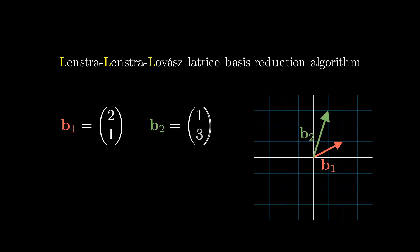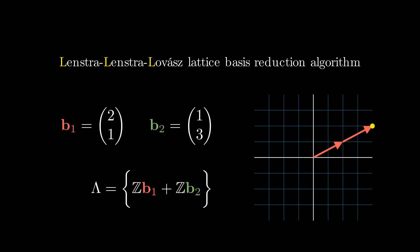A basis is something that can create a lattice. Using these two vectors, a lattice is defined as the set of all vectors that can be expressed as a linear combination of them — specifically, every point expressible as some integer times b1 plus another integer times b2. For example, two times b1 plus zero times b2 gives one point, and one times b1 plus one times b2 gives another. Repeating this with every possible pair of integers creates the entire lattice, which is a periodic pattern of points in the 2D plane.